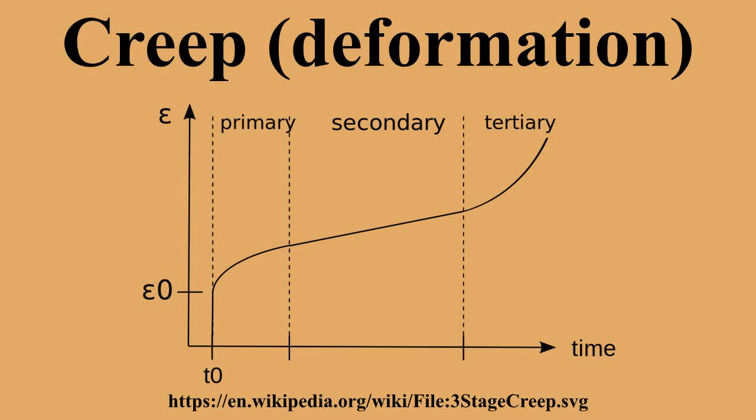Mechanisms of creep: The mechanism of creep depends on temperature and stress. Various mechanisms are: bulk diffusion; climb, where the strain is actually accomplished by climb; climb-assisted glide, where climb is an enabling mechanism allowing dislocations to get around obstacles; grain boundary diffusion; and thermally activated glide via cross-slip. Applications are mostly due to the reduced yield strength at high temperatures.